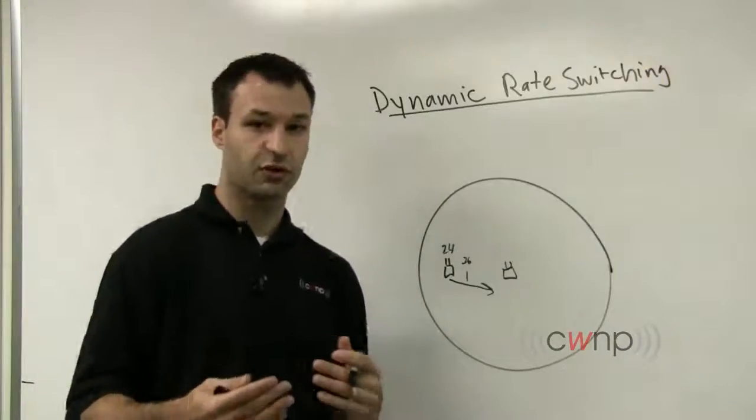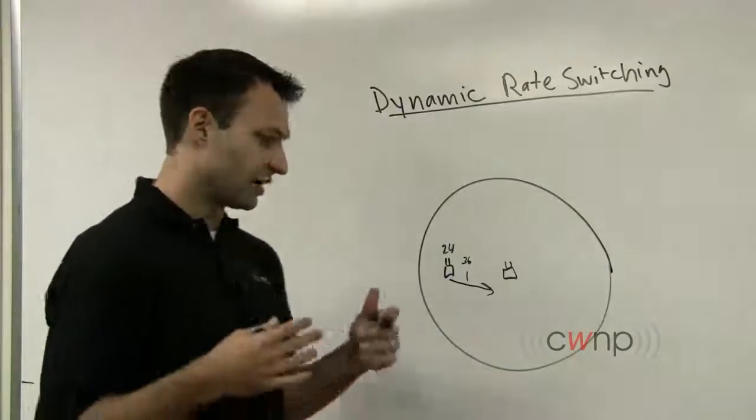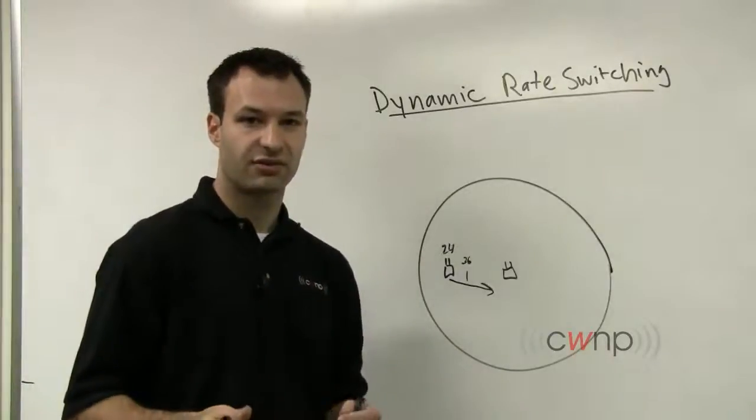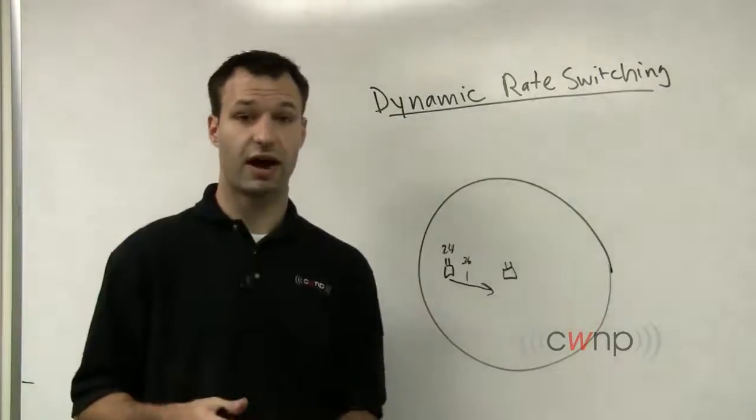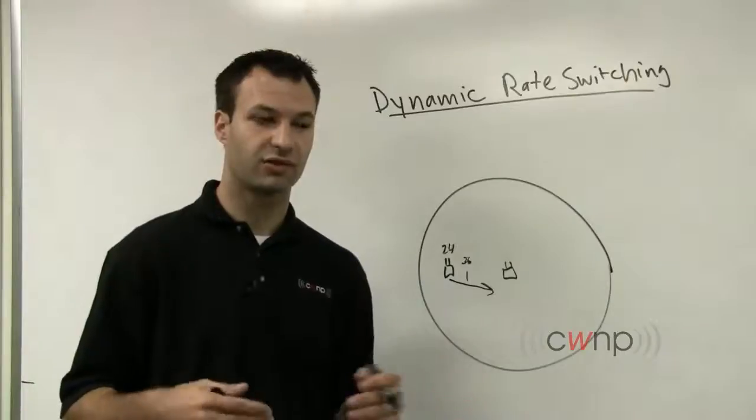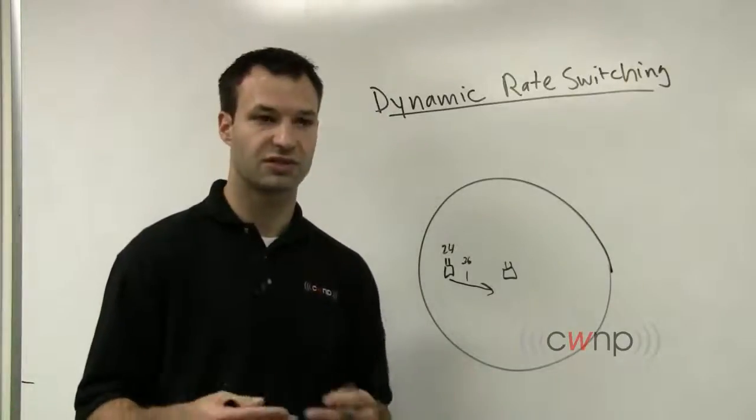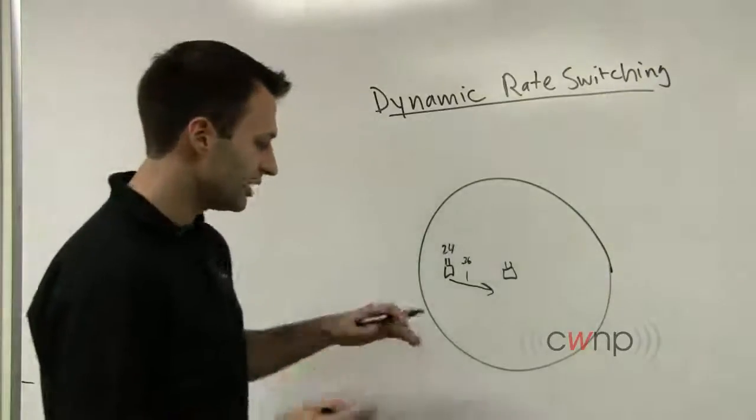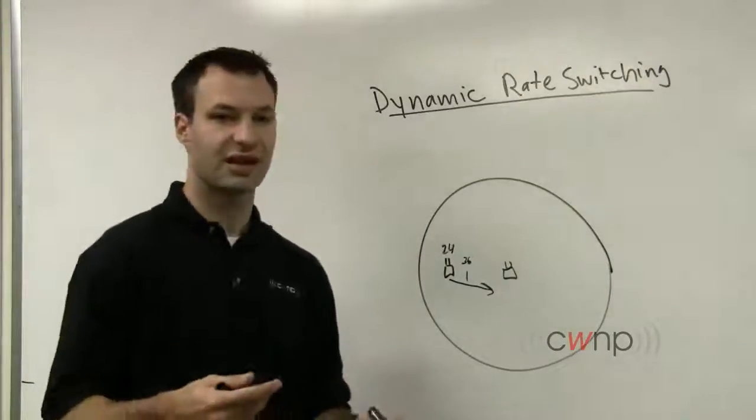All of these different metrics are figured into a dynamic rate switching algorithm. The 802.11 standard doesn't say how exactly dynamic rate switching should work. It doesn't specify an algorithm to use. It just says that's beyond the scope of this standard. So vendor implementations are specific to their preferences and their own algorithms.